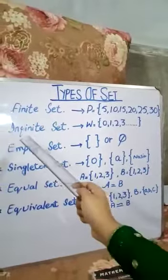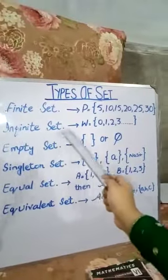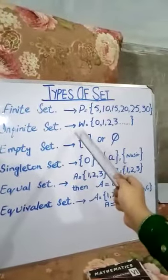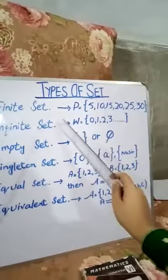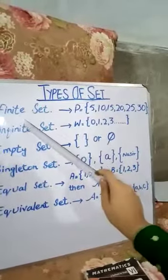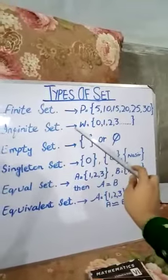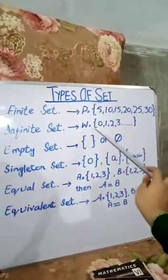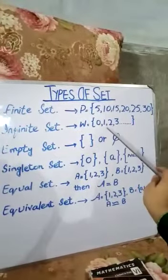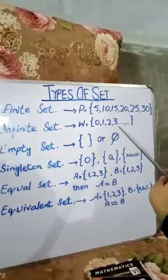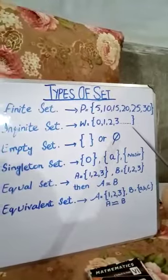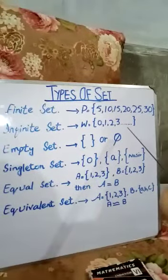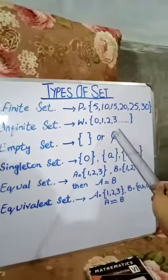Now, infinite set — a set that is uncountable is called an infinite set. For example, W = {0, 1, 2, 3, ...} and so on. It is an infinite set.